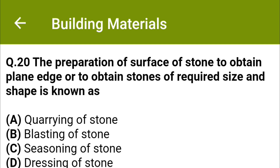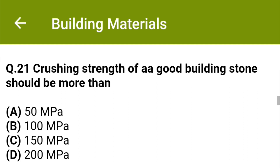The preparation of the surface of stone to obtain plain edges or to obtain stones of required size and shape is known as Option A quarrying of stone, Option B blasting of stone, Option C seasoning of stone, Option D dressing of stone. The correct answer is Option D, dressing of stone. Crushing strength of a good building stone should be more than Option A 50 MPa, Option B 100 MPa, Option C 150 MPa, Option D 200 MPa. The correct answer is Option B, 100 MPa.